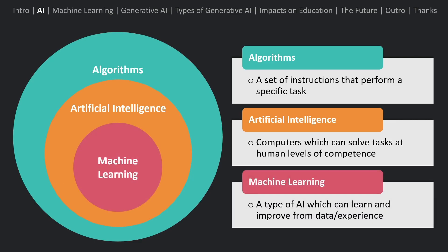However, usually when we think of AI, we're talking about machine learning. Machine learning is a specific type of AI which can change its behavior from experience or data, meaning that a human programmer doesn't have to explicitly state every step of a problem.